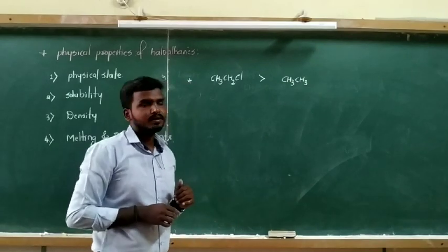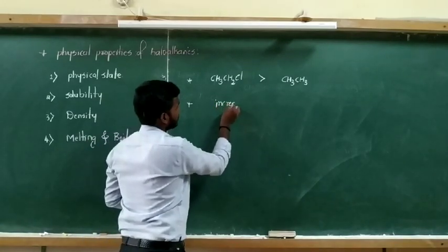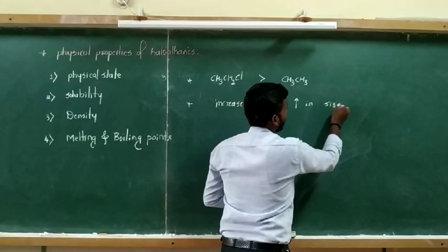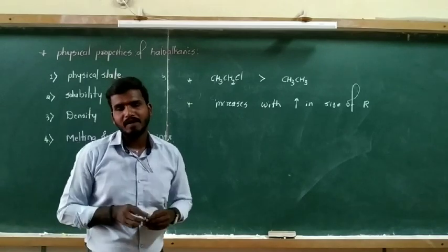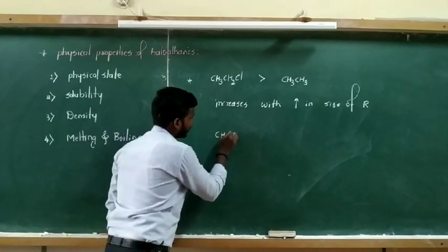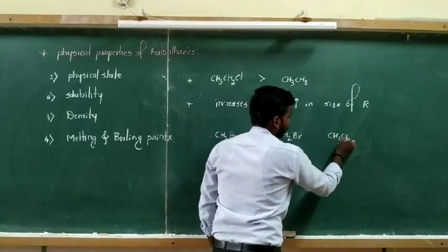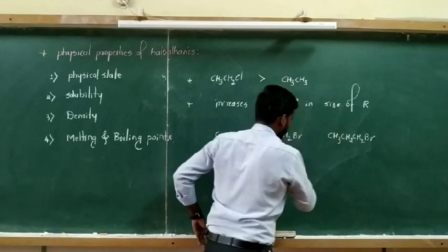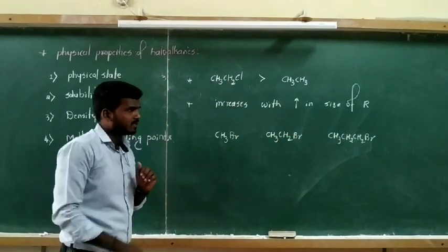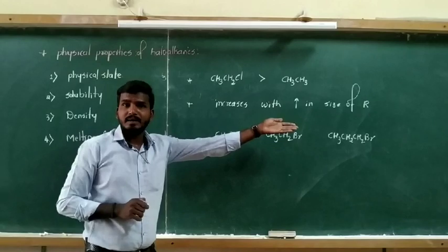So ethyl chloride has a higher boiling point compared to its parent alkane, ethane. Additionally, the melting and boiling points of haloalkanes increase with increase in the size of the alkyl group. For example, among methyl bromide, ethyl bromide, and propyl bromide (CH3CH2CH2Br), as we move from one compound to the next, the number of carbons in the alkyl group increases. As the size of the alkyl group increases, the melting and boiling points of haloalkanes also increase.